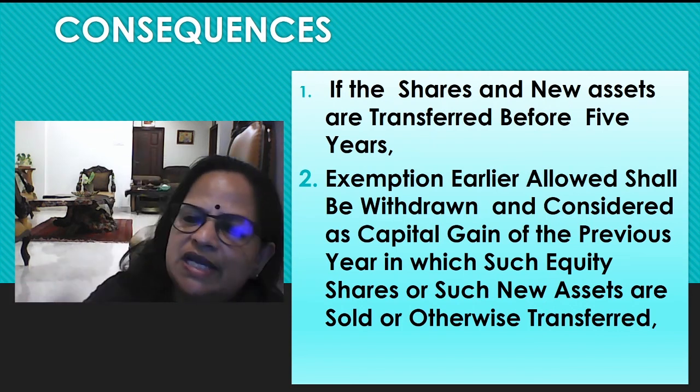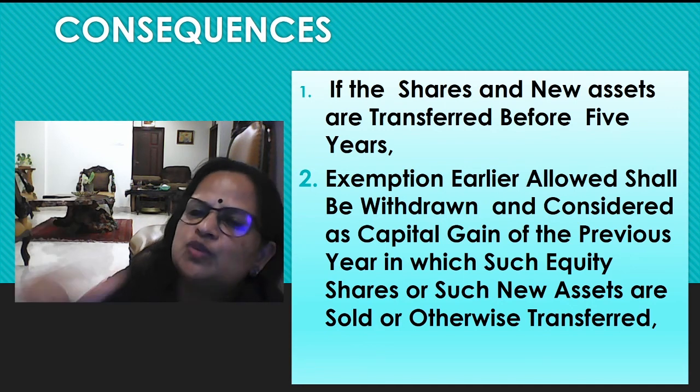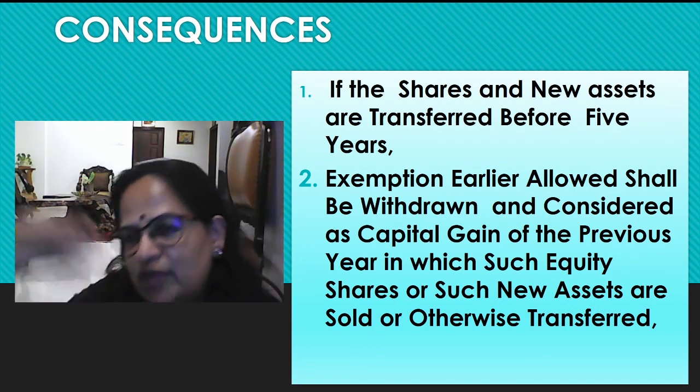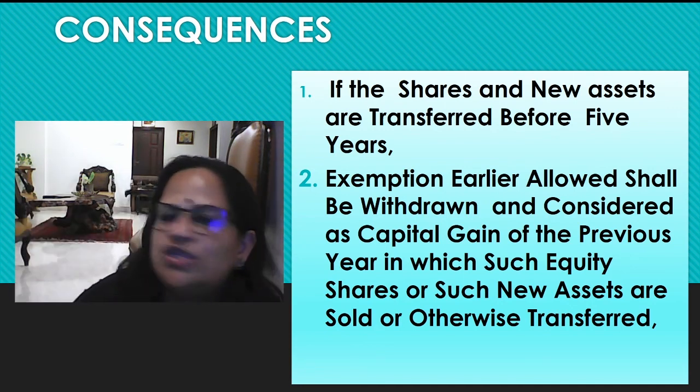If they are transferring the land or new residential house property, or transferring or selling the equity shares before 5 years, the exemption is withdrawn. Sections 54G, 54GA and 54GB have only theoretical importance. When checked again and again, no questions appear for these sections in problems — other sections get the weightage.